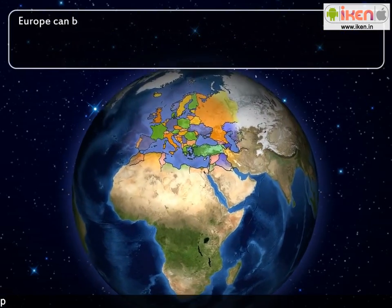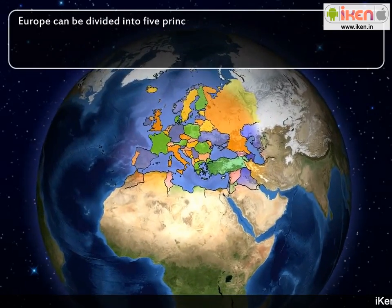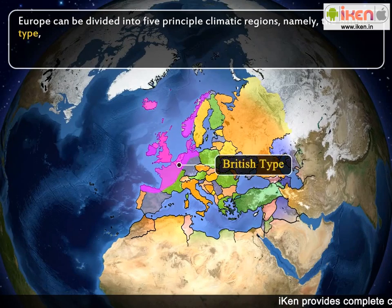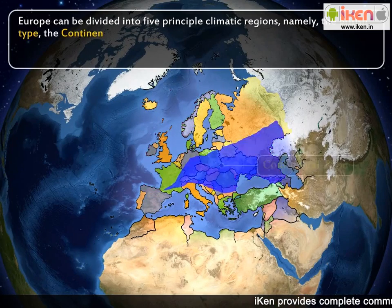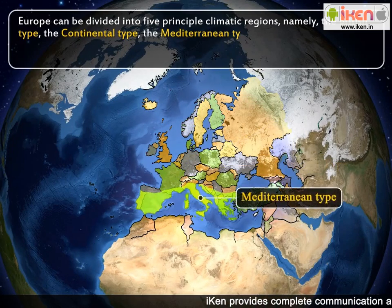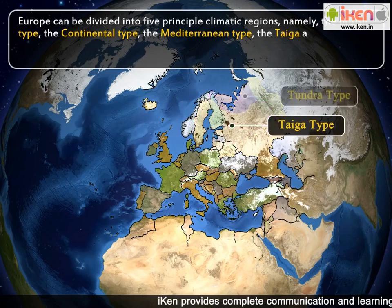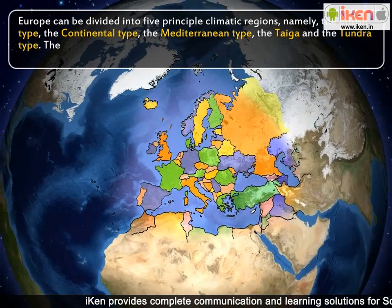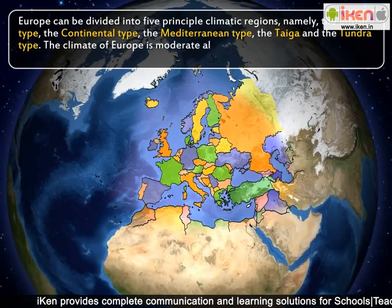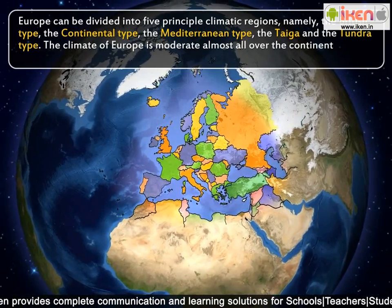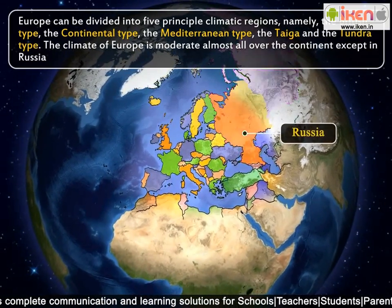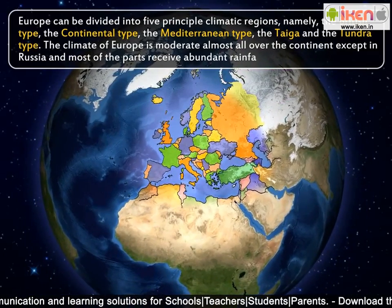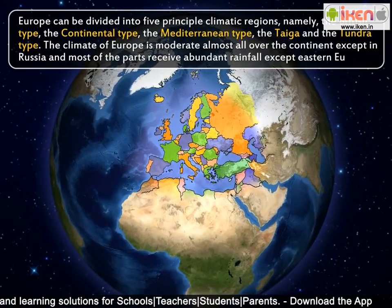Europe can be divided into five principal climatic regions: the British type, the continental type, the Mediterranean type, taiga, and the tundra type. The climate of Europe is moderate almost all over the continent except in Russia, and most parts receive abundant rainfall except Eastern Europe.